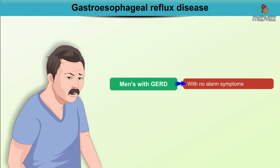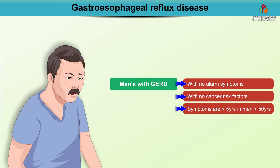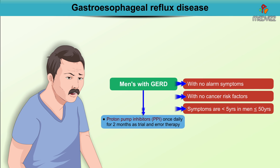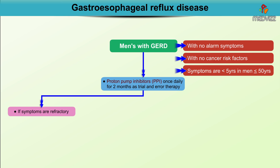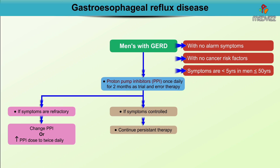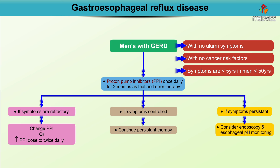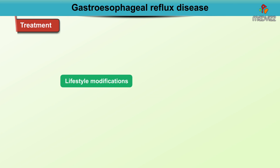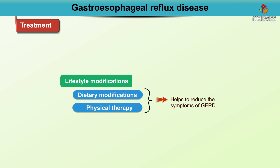If there are no alarm symptoms, no cancer risk factors, and symptoms are less than five years in men 50 years or younger, a once-daily PPI for two months can be employed as a trial therapy. If symptoms are refractory, switch to a different PPI or increase the PPI dose to twice daily. If symptoms are controlled, continue persistent therapy; in persistent symptoms, consider endoscopy or esophageal pH monitoring.